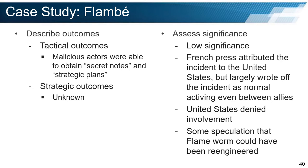At the tactical level, this incident was obviously a success — the attacker was able to compromise the Elysee network and exfiltrate sensitive data. At the strategic level, the results are unknown since we do not know the greater context of this incident, the strategic motives of the attacker, or how the attacker was able to use the stolen information. The incident appears to have relatively low significance. The French press attributed the intrusion to the United States but largely wrote it off as normal espionage activities that take place between states, even when those states are allies. The United States denied involvement, and there is little motive or evidence to suggest that the U.S. was involved other than the fact that the Flambe malware was a variant of the Flame worm, which many attribute to the United States.